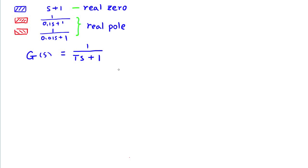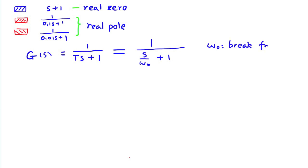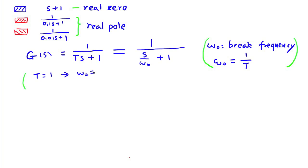Let's look at the general case of the real pole problem. Here, omega_0 is the reciprocal of T. It is named the break frequency or corner frequency. For our three cases, we have different time constants. If T equals 1, the break frequency is 1. If T is 0.01, the break frequency will be 100.